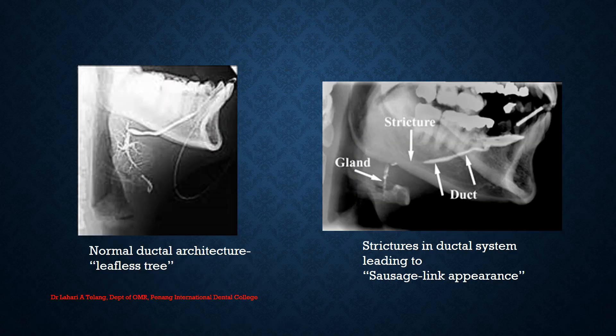After the dye is injected, radiographs are taken. This is how a normal submandibular salivary ductal system appears — the normal ductal architecture is described in radiology terminology as a 'leafless tree pattern.' If strictures are present in the ductal system, the appearance is called a 'sausage link appearance,' because the dye has not flowed consistently throughout due to the strictures.